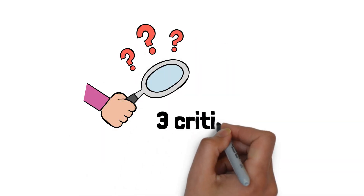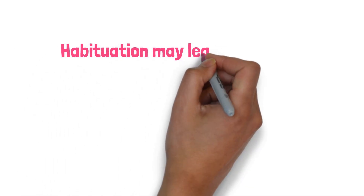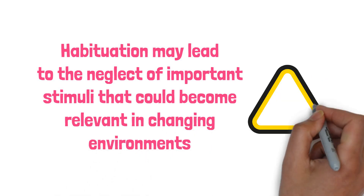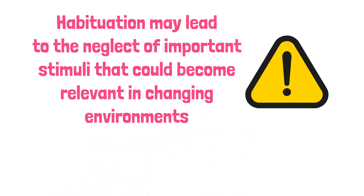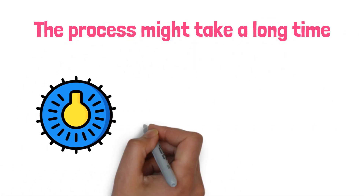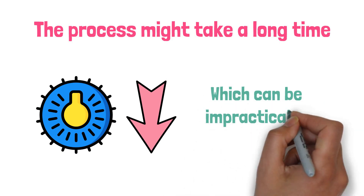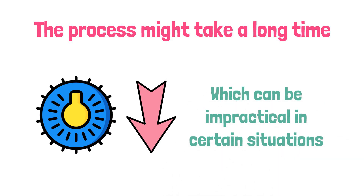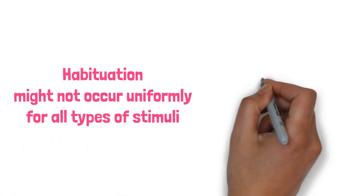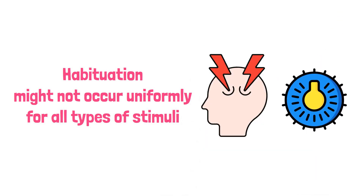Now let's explore three criticisms of habituation. First, habituation may lead to the neglect of important stimuli that could become relevant in changing environments, posing potential risks. Second, the process might take a long time, requiring numerous exposures to achieve a significant decrease in response, which can be impractical in certain situations. Third, habituation might not occur uniformly for all types of stimuli, with some stimuli remaining consistently bothersome despite repeated exposure.